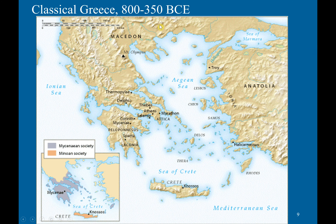This is classical Greece, from 800 to 350 BCE. We can see where Mycenaean and Minoan society were, and now we have the famous city-states: Delphi, home of the Oracle of Delphi, Thebes, Athens, Corinth, and Sparta.